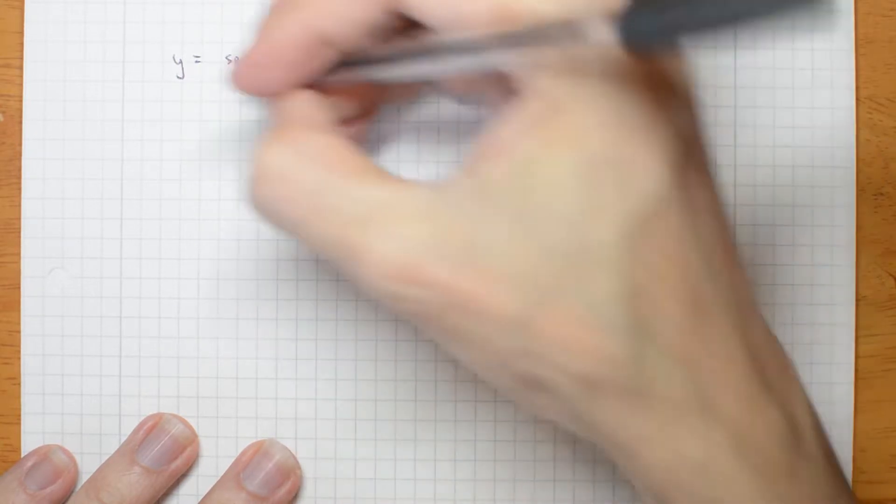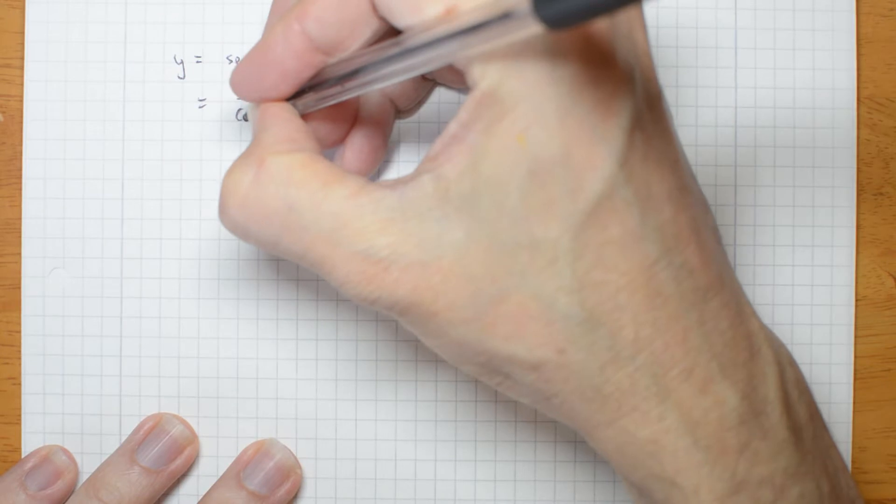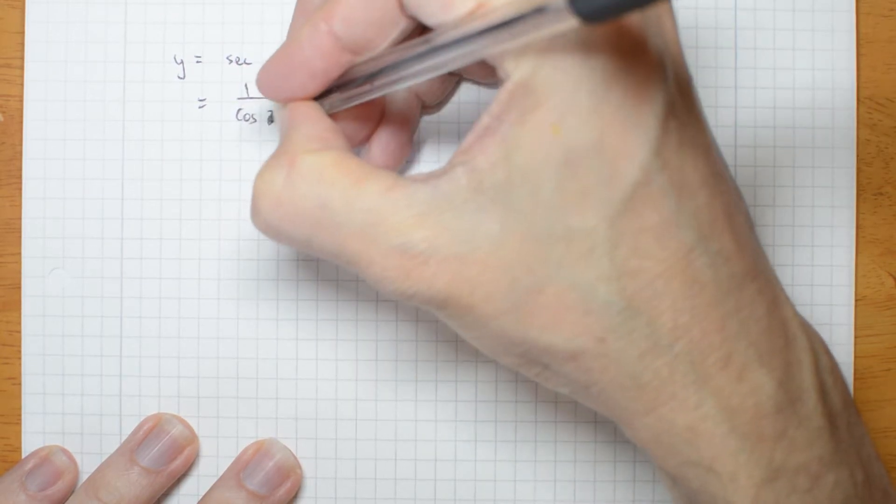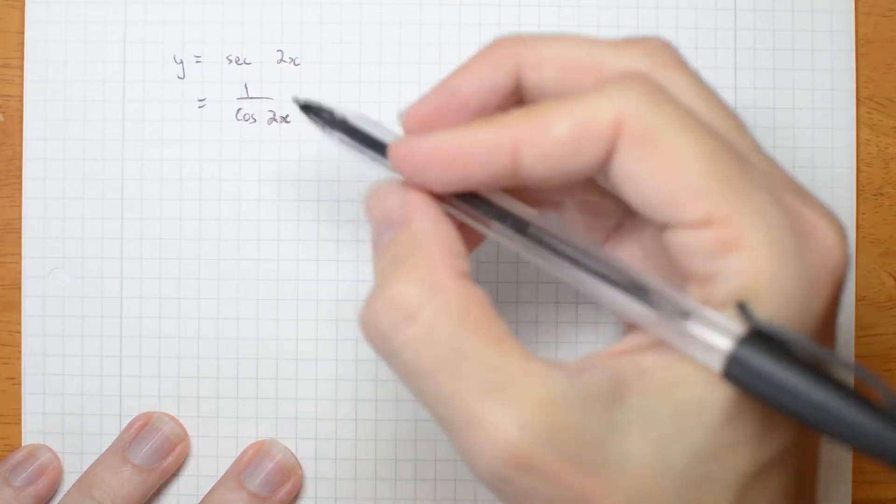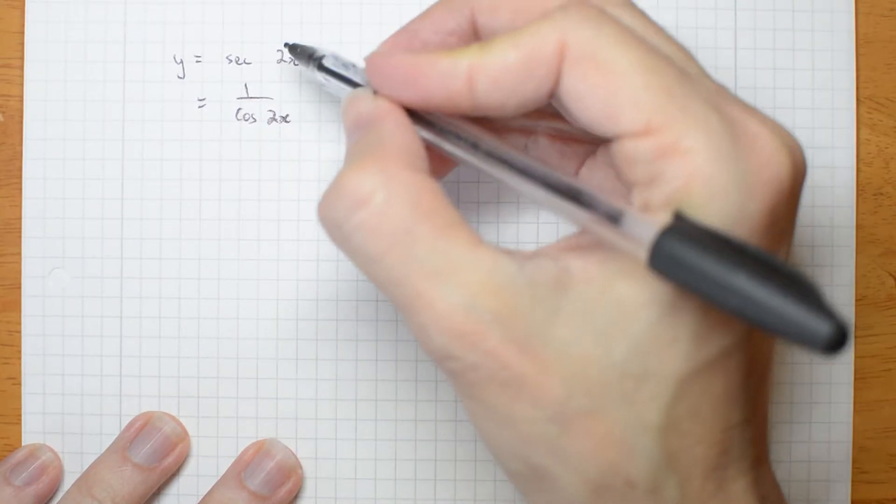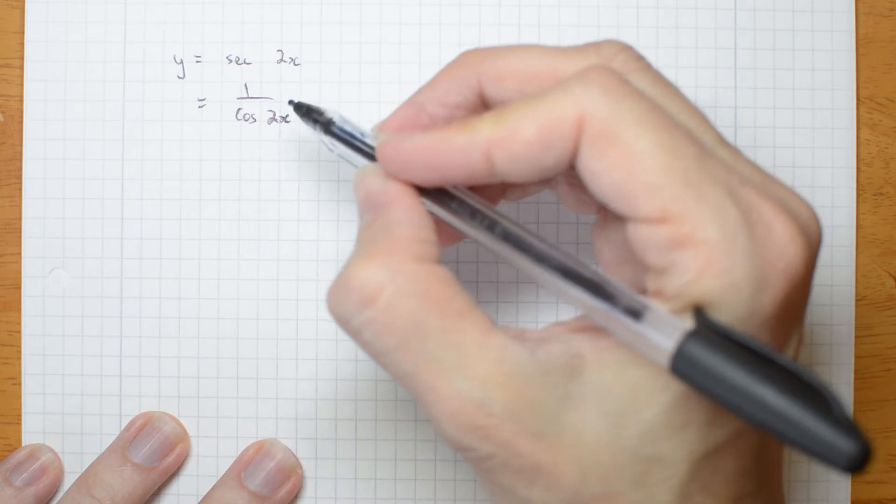So sec 2x is just 1 over cos 2x. It's the reciprocal of a cos. The normal cos period, and therefore the normal sec period, is 2π.